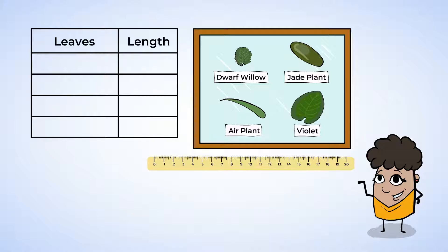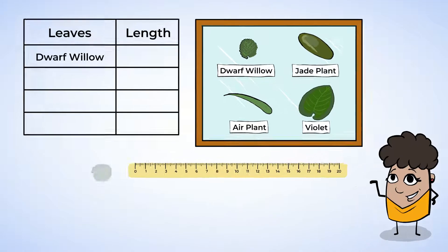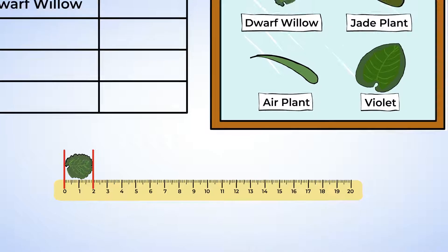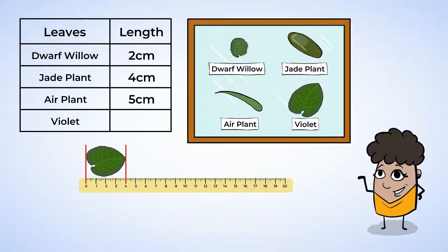First, measure the one from a plant called Dwarf Willow. Let's use centimeters because it is so small. Wow, it's only two centimeters long. That's tiny. This one is from a jade plant. Let's line up the ruler and see. It's only four centimeters long. Here is one from a plant called Airplant. Lining up the ruler, we can see that this one is five centimeters. This last one is from a violet plant. Measuring it, we can see that it is four centimeters long. Great job!